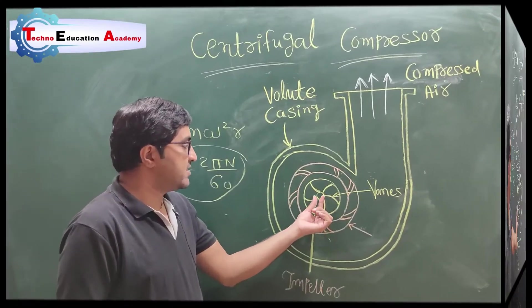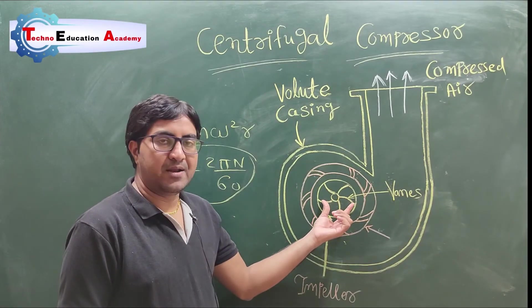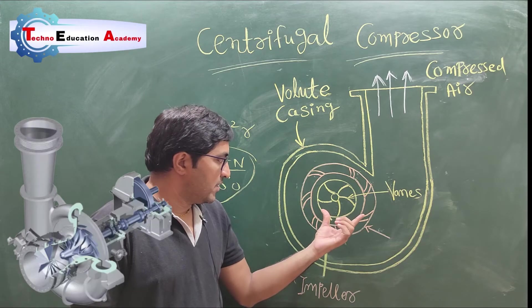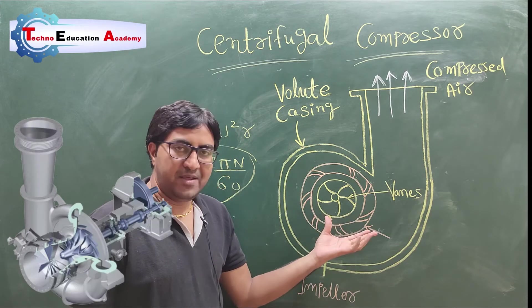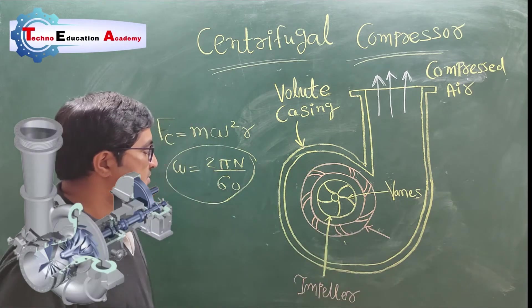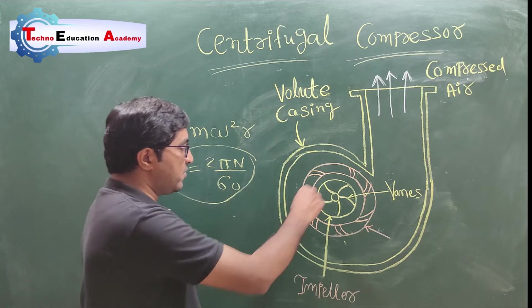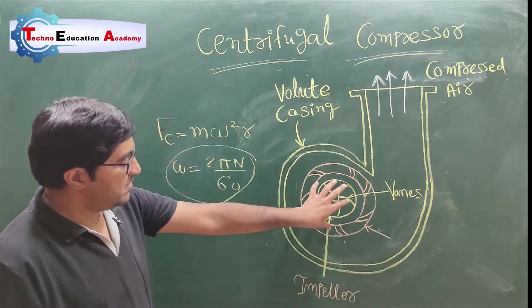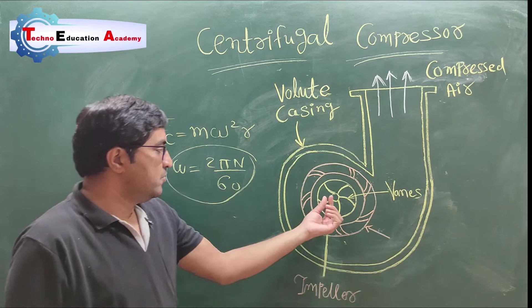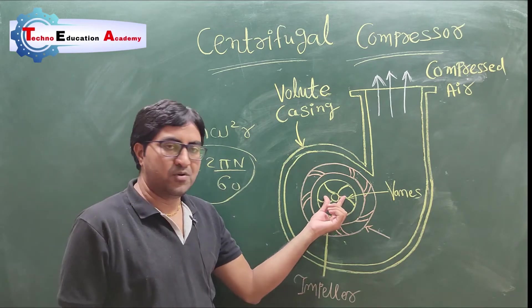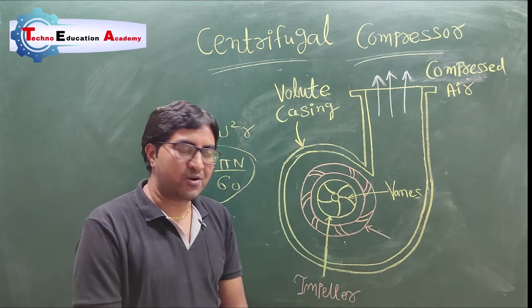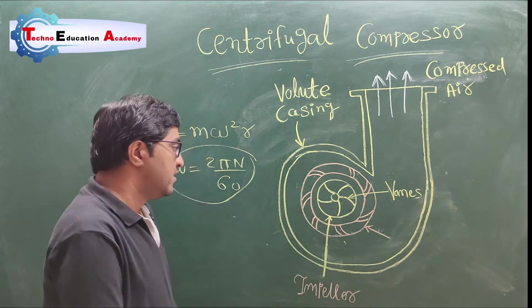The shaft of the impeller is connected with the motor, so the motor is an input device — we receive power from the motor. The motor will rotate the impeller blades. Whenever the impeller blades are rotated, due to centrifugal force the mass is thrown away from the centroidal axis.